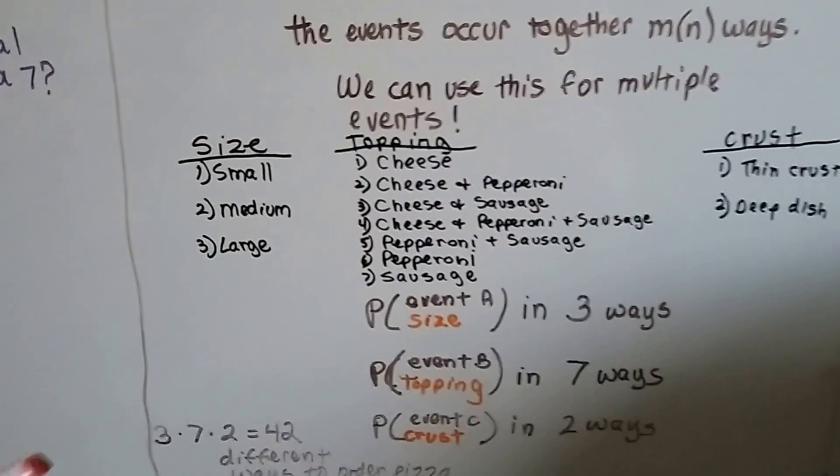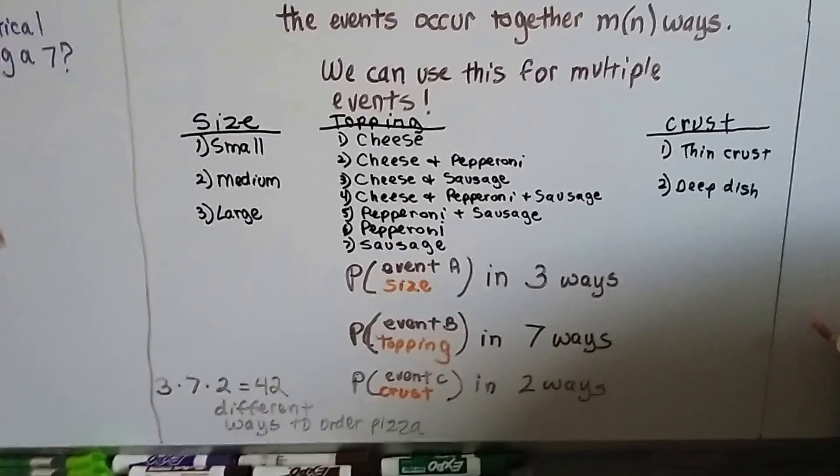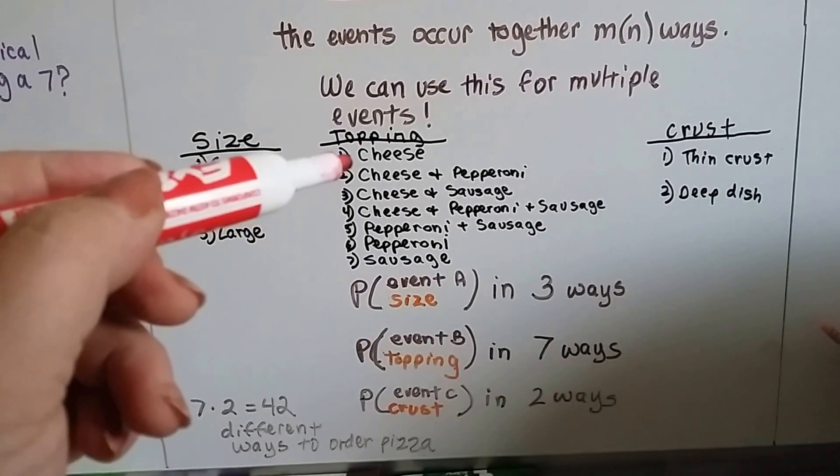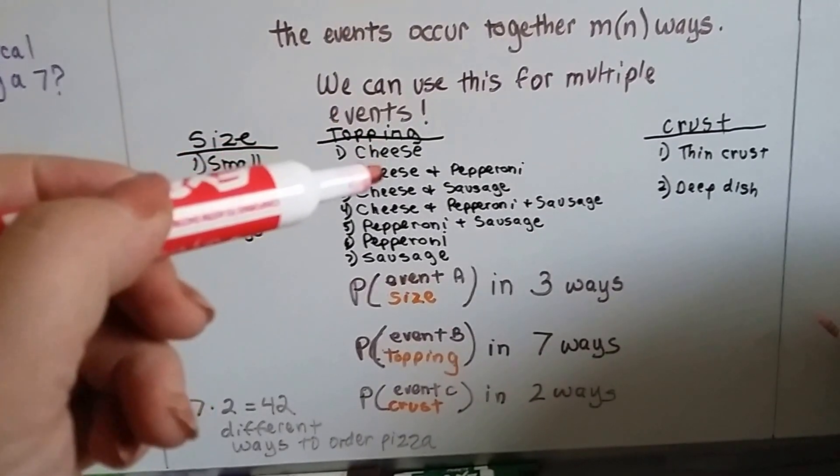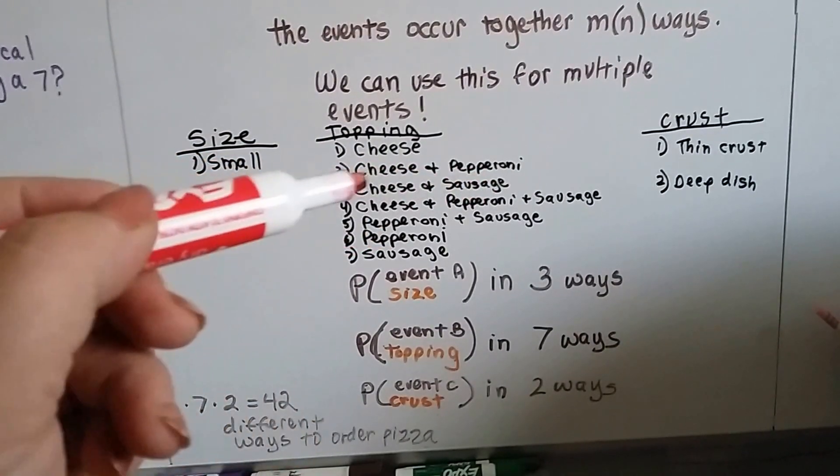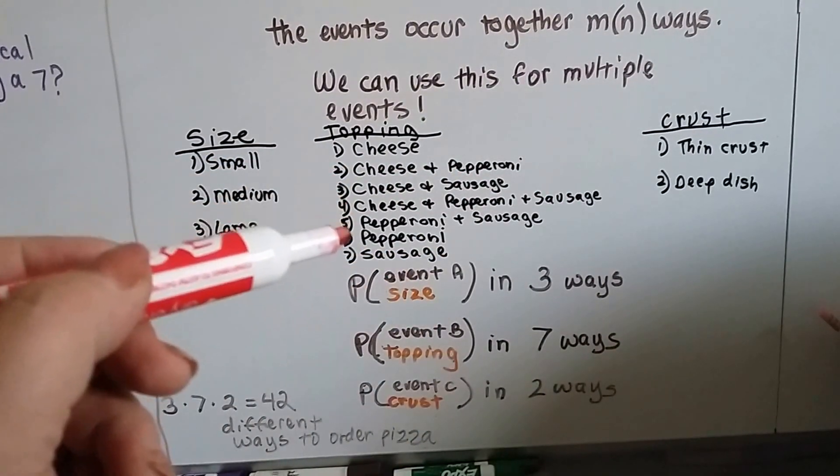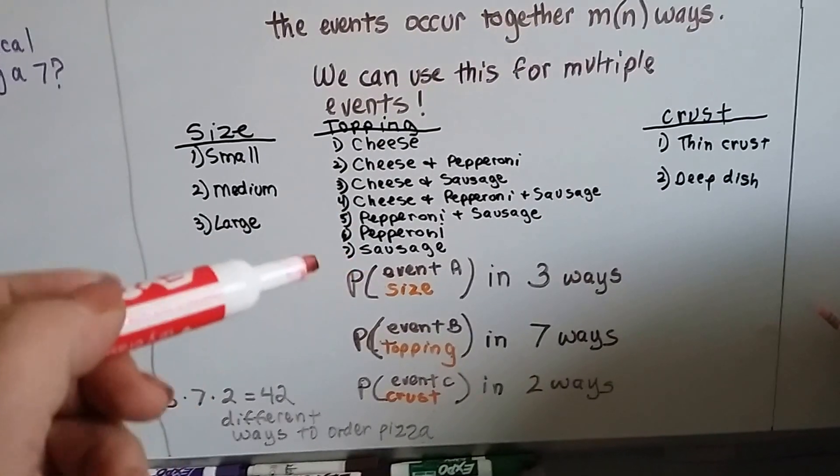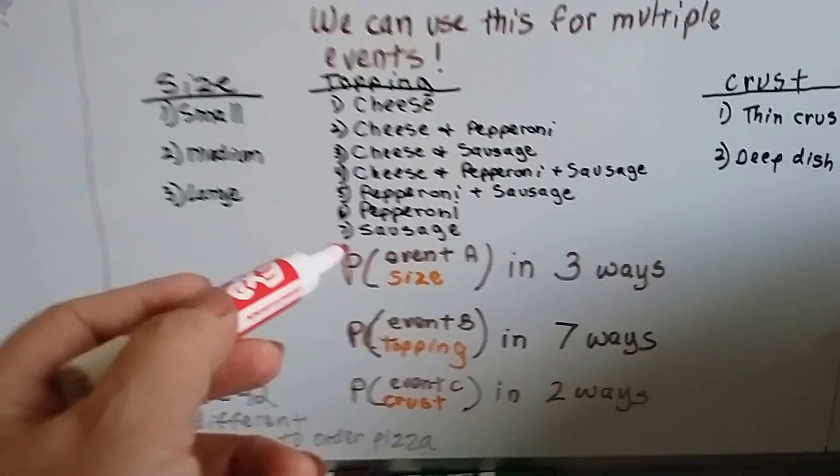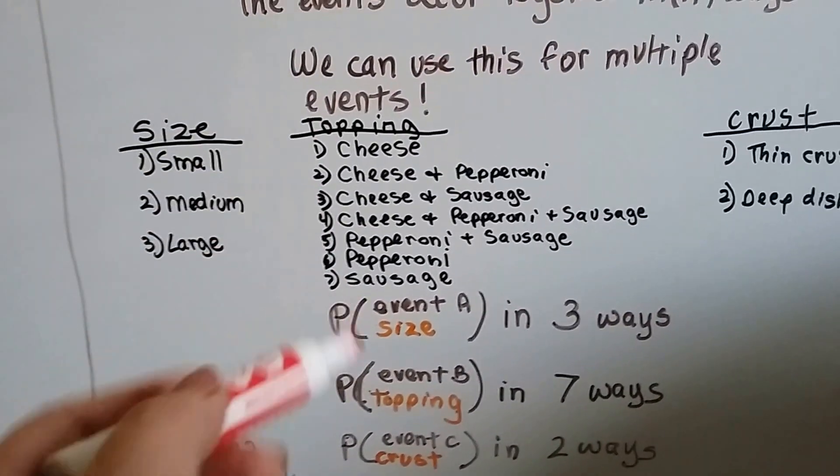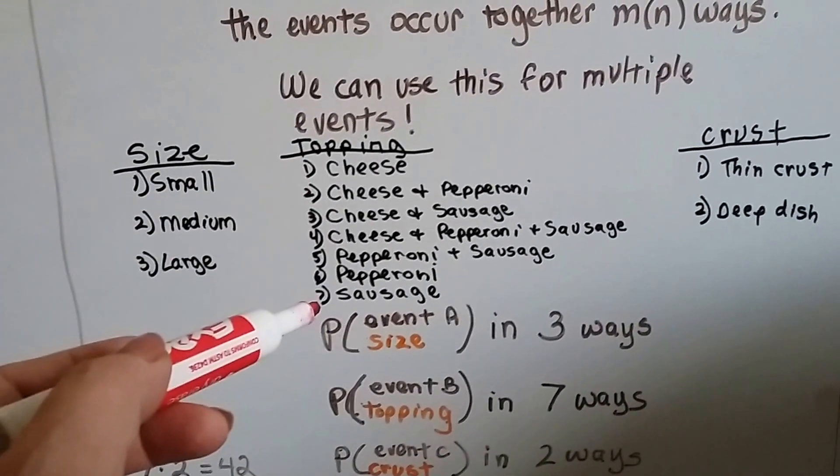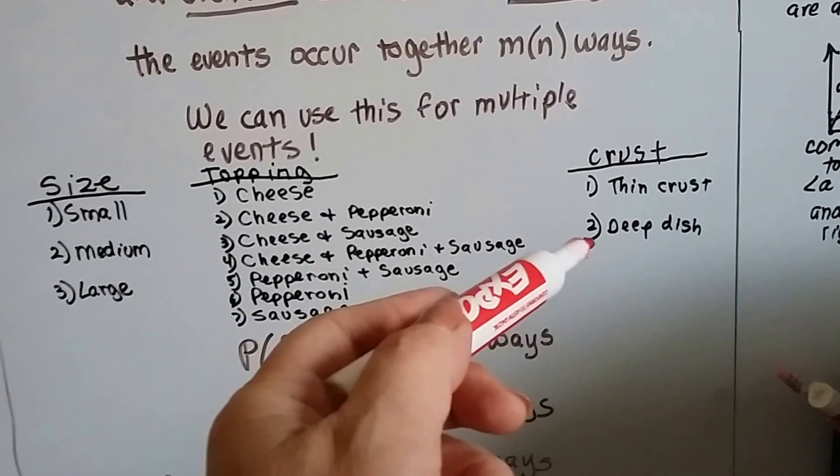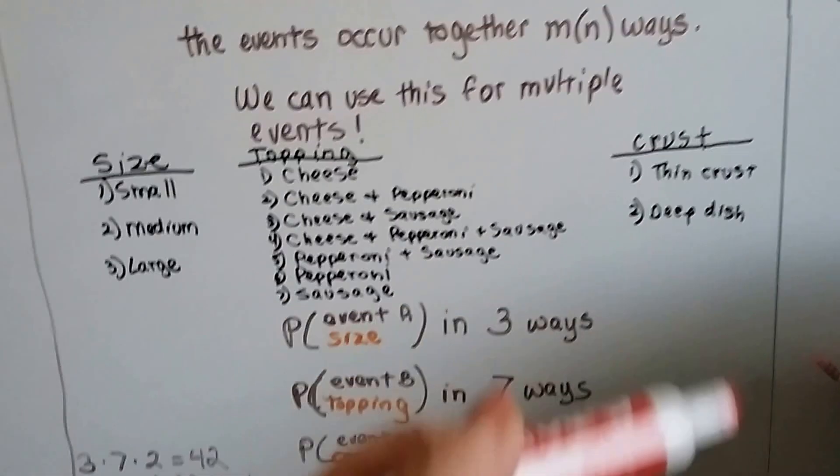So let's take a look at what would happen with pizza. We've got a small, medium, or large pizza. And here's the toppings. We can have cheese, cheese and pepperoni, cheese and sausage together, cheese, pepperoni, and sausage together. Or we could just have pepperoni and sausage together, or we could have plain pepperoni or plain sausage. So that means there's seven different ways we could do these toppings. Now there was three different sizes, but now we have seven different toppings. Or we could choose a crust: thin crust or deep dish. Now we have two different crust types.